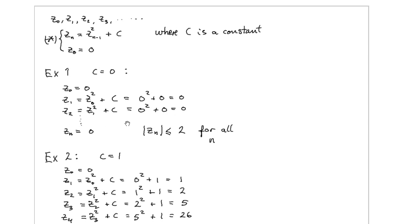So every element in this sequence is now equal to 0, and in particular we note that the absolute value, which is going to be important later on, turns out to be less or equal to 2 for all n.